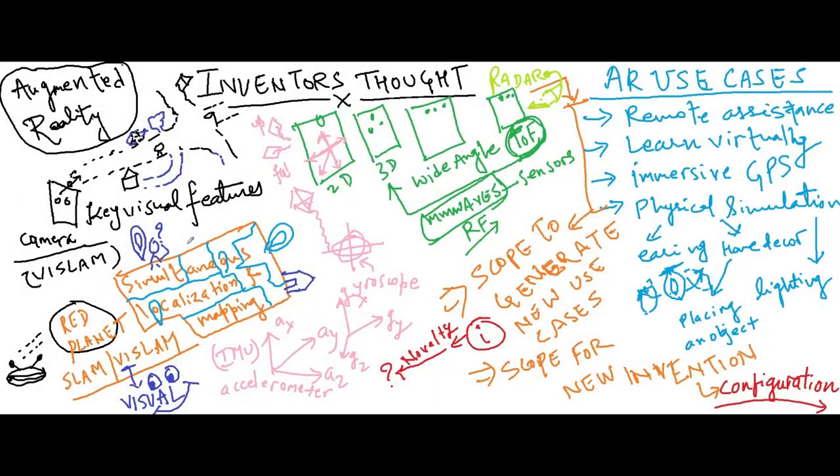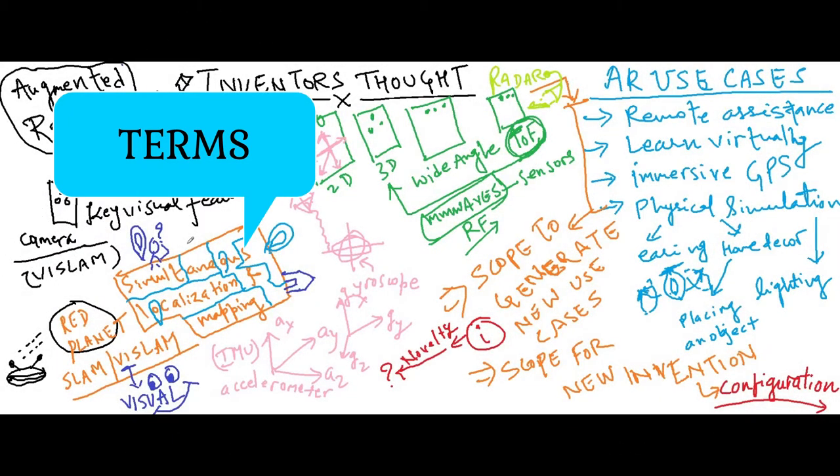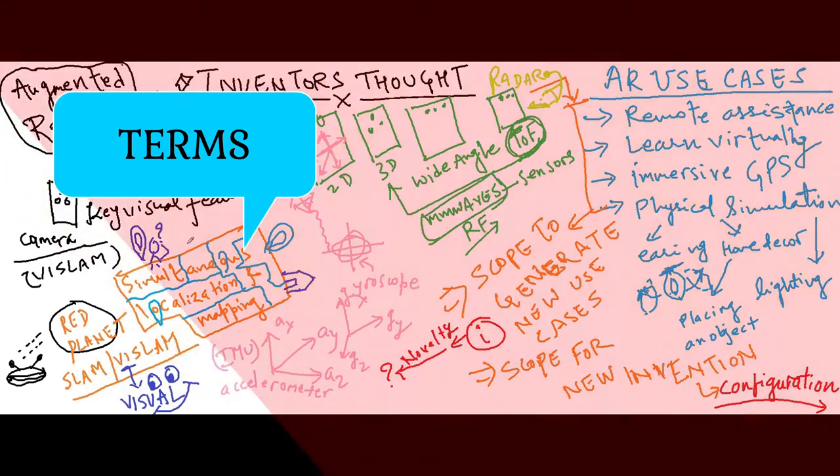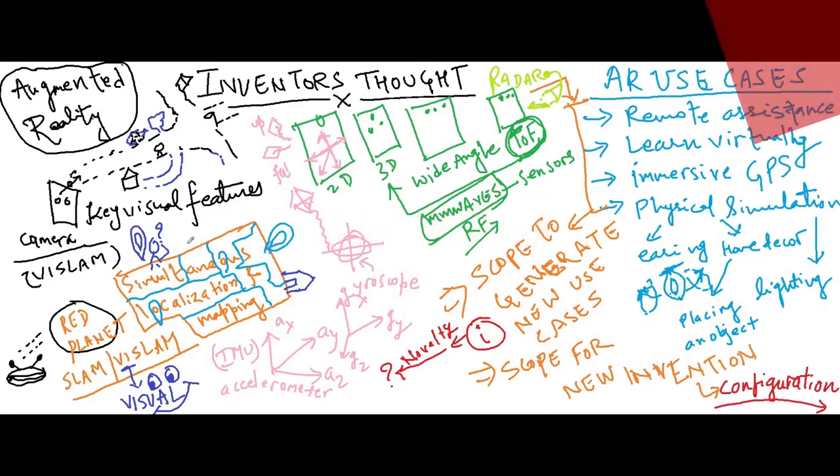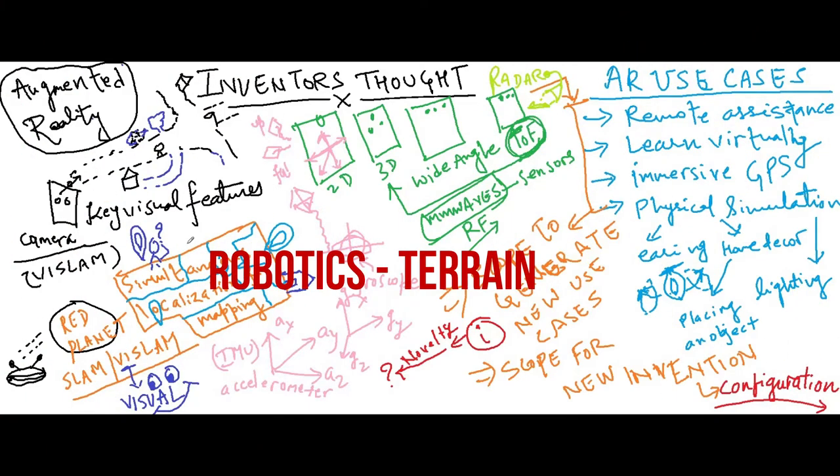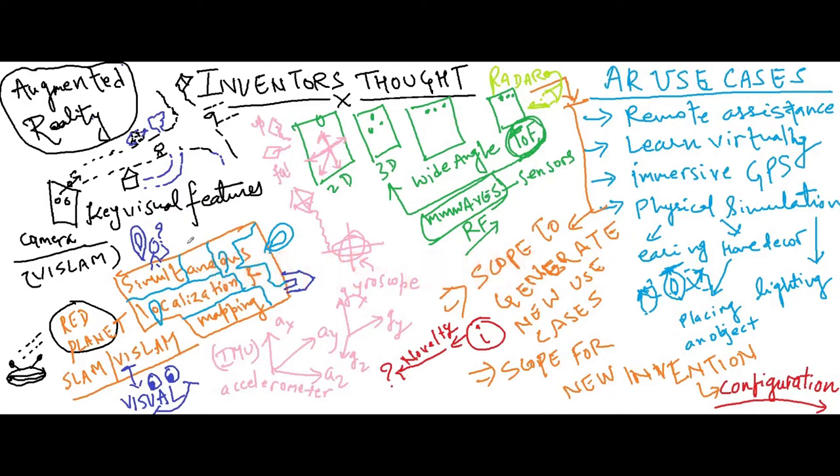There are some technologies to learn here for understanding augmented reality and for doing our own invention. The first one is simultaneous localization and mapping or visual SLAM. Such technologies are well-known in robotics for understanding unknown terrain. For example, autonomous robots on Mars. Second technology to learn here is inertial measurement unit which has two sensors.